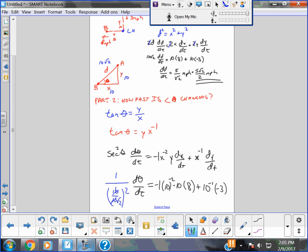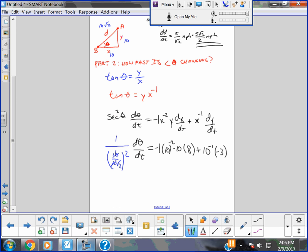I don't use the calculator, guys. I won't use my calculator. Got some math to do. 1 over square root of 2 squared is 1 over 2. Flip it up. This is 2 d theta dt. Again, that's just math.